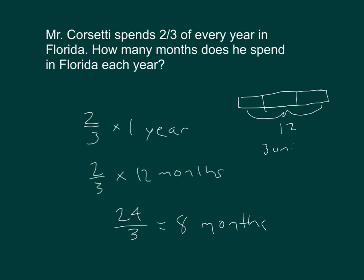Showing our work another way. Three units equals 12. One unit equals 12 divided by three, which is four. And two units equals four times two, which is eight. Labeling our tape diagram a little bit more. And we were looking at two of those units. Two-thirds of the year that he spends.